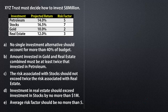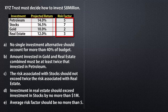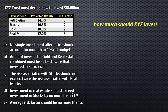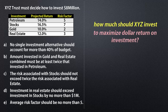Hello there. In this tutorial, I'll be formulating a linear programming model for this investment problem. XYZ Trust has to invest $8 million in petroleum, stocks, gold and real estate, given these projected rates of return, these risk factors and subject to these guidelines. The question is, how much should XYZ invest in each of these alternatives in order to maximize dollar return on investment?